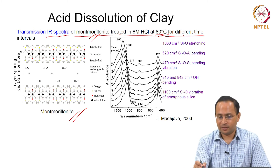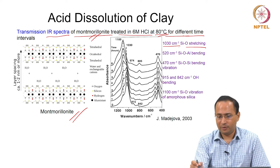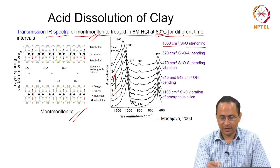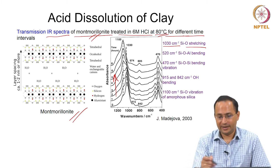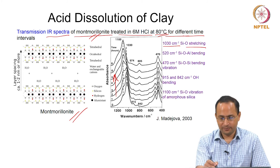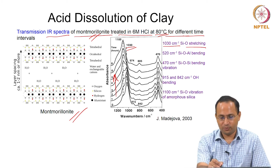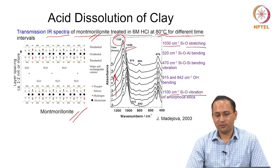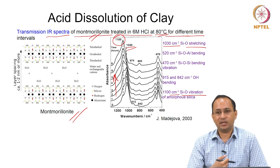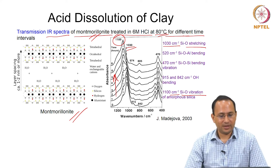For example, the peak at 1030 wavenumber tells us about Si-O stretching. As the clay is exposed to 6 molar hydrochloric acid at 80°C for 1, 2, 3, 4, 5, 6, and 8 hours, the peak at 1030 starts disappearing, and finally a 1100 cm⁻¹ peak appears which corresponds to silicon-oxygen vibration of amorphous silica. These kinds of changes in bonding environments can be captured using infrared spectroscopy.